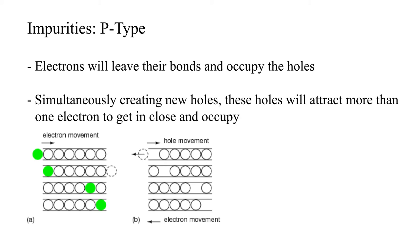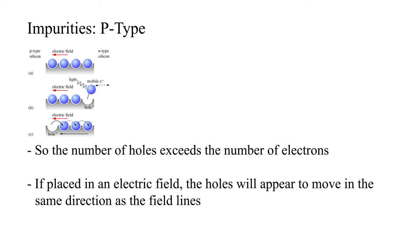Simultaneously, new holes will be created at the site where the electrons left. As these holes will attract more than one electron to get in close and occupy, the speed of forming holes will be higher than that of the electrons leaving, and so the number of holes will be greater than the number of electrons.